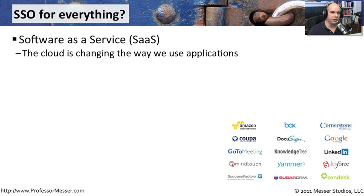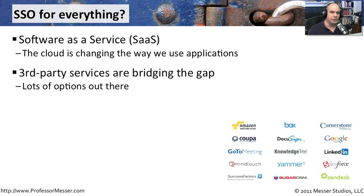Software as a service has really changed the way we use applications and creates complexities in dealing with single sign-on. You've got web services that might be on Amazon, a web conferencing system, or a storage location for data recovery. Each one of those individual systems is a different company, different databases, and a different login process. To consolidate all of those into a single sign-on becomes a little more complicated. To address this need to reliably authenticate people into all these different services automatically, there are a number of third-party companies and pieces of software available.